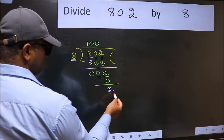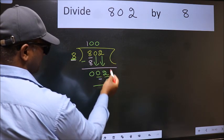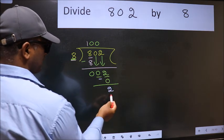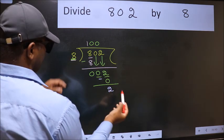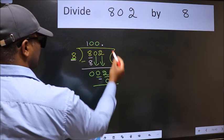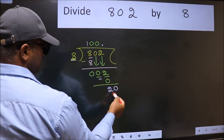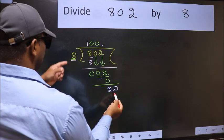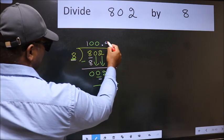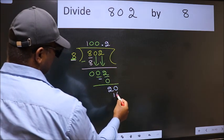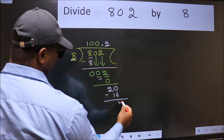We get 2. Over here we did not bring any number down, and 2 is smaller than 8. So now we can put a decimal and take 0, making it 20. A number close to 20 in the 8 table is 8 times 2 is 16. Now we subtract and get 4.